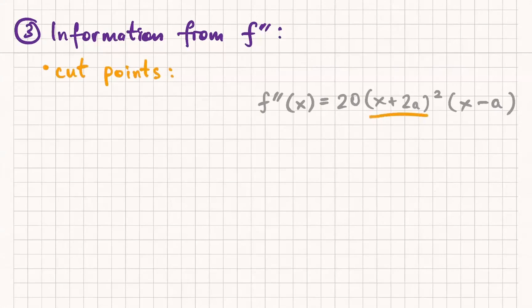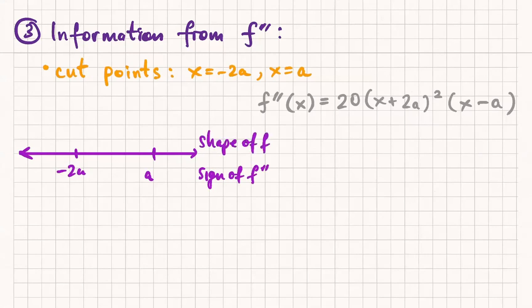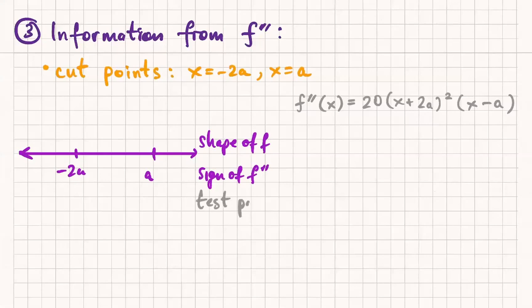Okay. So for the second derivative, what are our cut points? We get x equals negative 2a again, and we get x equals a from the other factor. Okay, good. And now we do another sign chart. It's like, like you should be exhausted by these. You should have to. Let's make this a little bit smaller. Like you should be so sick of sign charts.